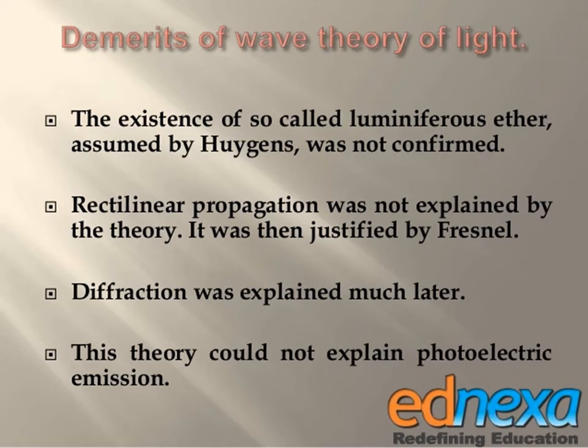The drawbacks of Huygens' theory: the existence of the so-called luminiferous ether assumed by Huygens was not confirmed. Luminiferous ether was not found to be present as a medium. The rectilinear propagation of light was not well explained by this theory. This theory could not explain the photoelectric effect.